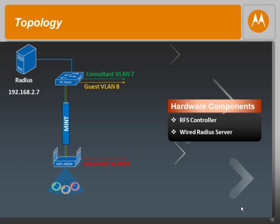Our RADIUS server has an IP address of 192.168.2.7. Any requests coming in from the AP would be tunneled to the RF switch, and the RF switch would then proxy that request to the RADIUS server. The main hardware components in our topology today are an RFS controller and a wired RADIUS server.